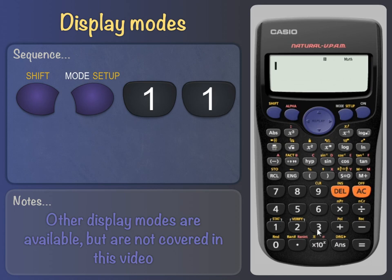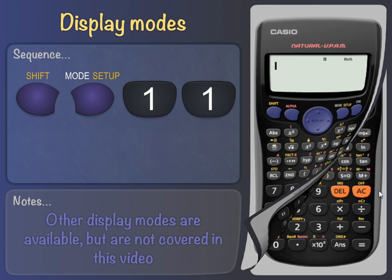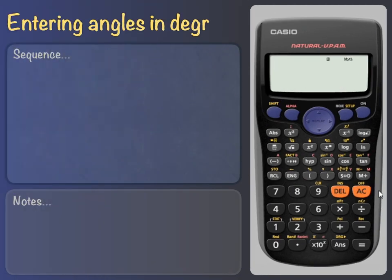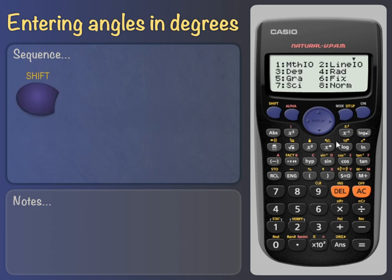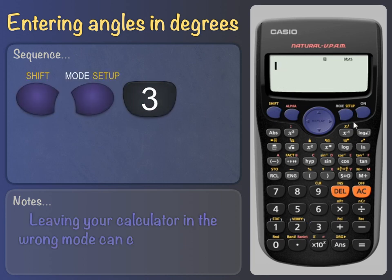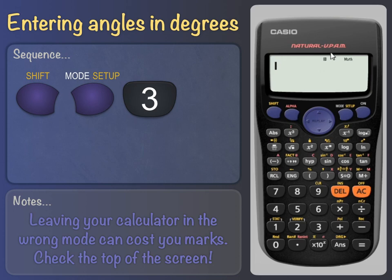Finally, be careful that after a fun-filled maths lesson, you've not left your calculator in radians mode when you want to be entering angles in degrees. To enter angles in degrees, all we have to do is press Shift Setup 3. You should see a small letter D at the top of the screen indicating this choice.